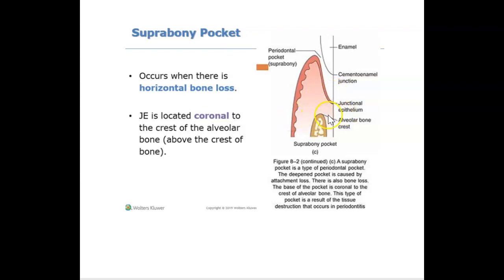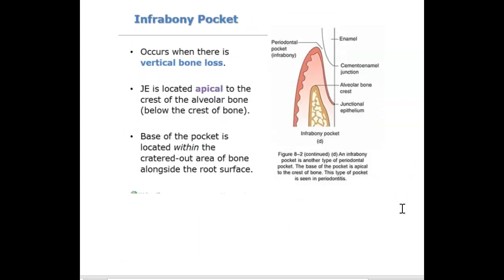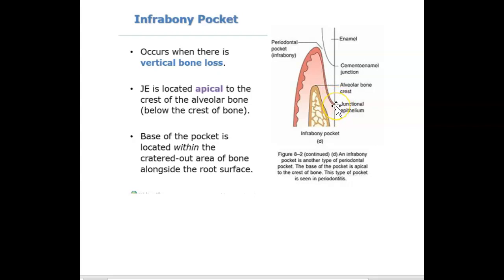This happens when we have horizontal bone loss — anytime there's horizontal bone loss this would occur. Now let's look at infrabony. Infra means below, so below the bone. When we look at the junctional epithelium in relation to the crest of the bone, we can see in this case we have an infrabony pocket because the junctional epithelium is infra, or inferior — infra comes from inferior.